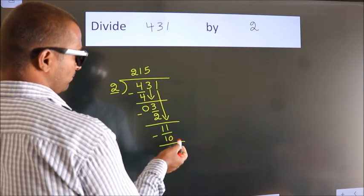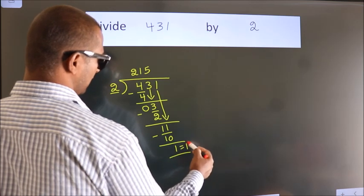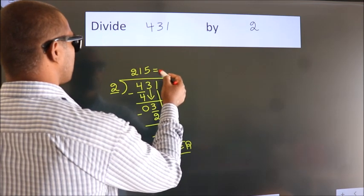No more numbers to bring it down. So, we stop here. This is our remainder. This is our quotient.